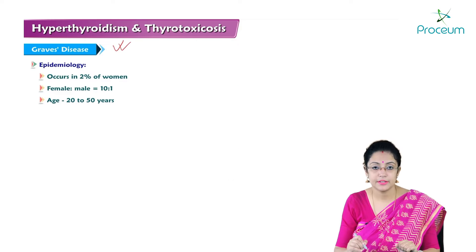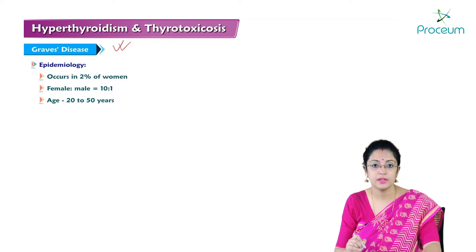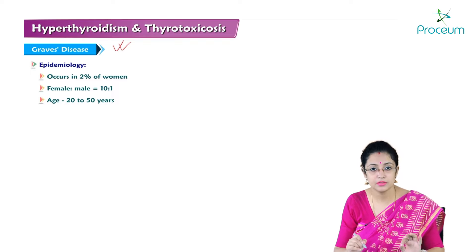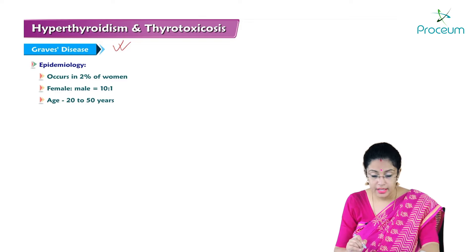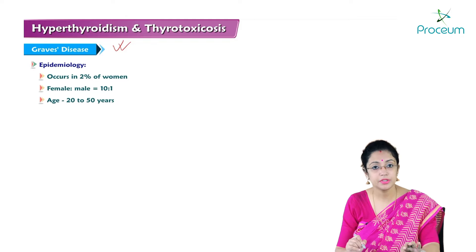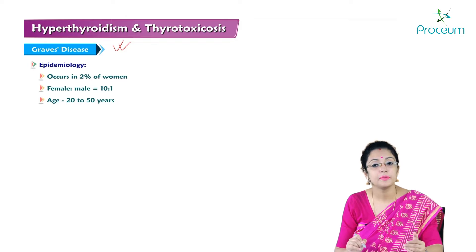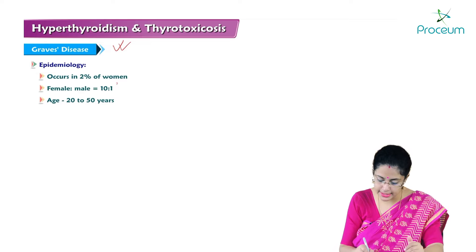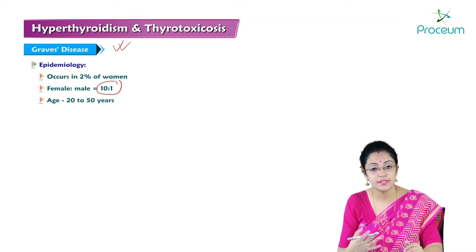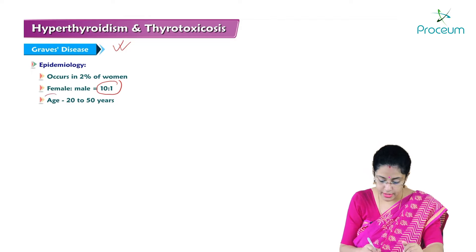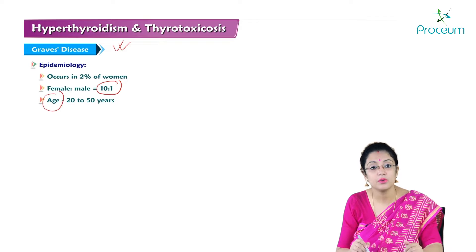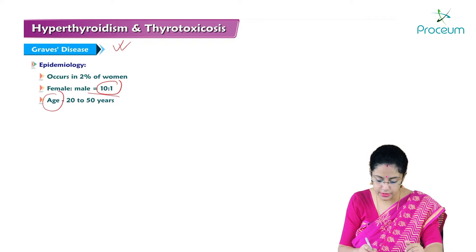Let's discuss about Graves disease. Graves disease is one of the most common causes of hyperthyroidism. Epidemiologically, it occurs in 2% of women. Female preponderance is quite high; the female-to-male ratio is 10:1, so the disease is 10 times more common in females. The affected age group is between 20 to 50 years of age.